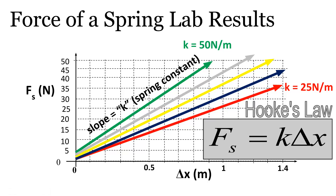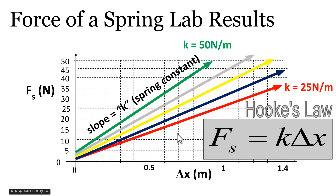In our force of a spring lab, this was the conclusion that we reached. When we looked at the relationship between the force exerted by a spring and the amount of stretch it had, we found out that as we increased the amount of stretch, it increased the amount of force required to do that stretching. When we looked at different springs, some springs required a higher amount of force for a given amount of stretch. They all had linear relationships between the amount of force and the amount of stretch, and we said that the slope was related to the strength of the spring, or the spring constant.